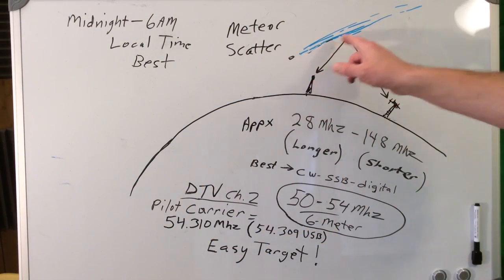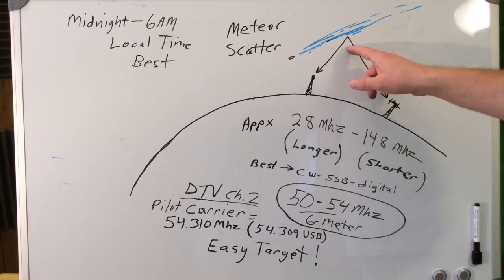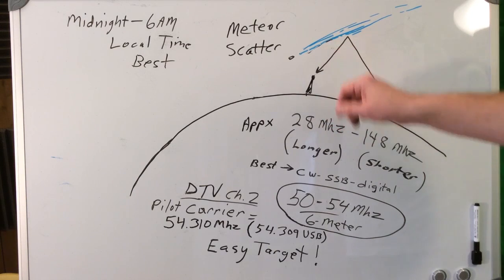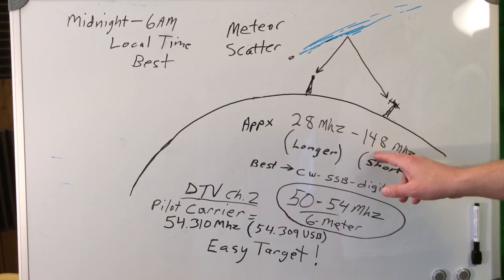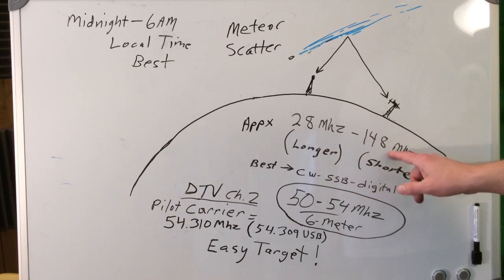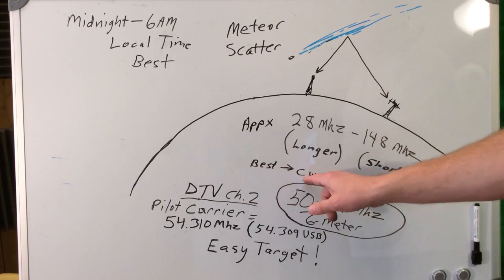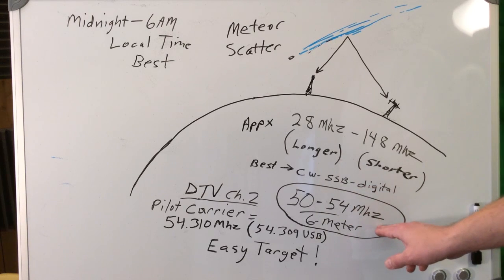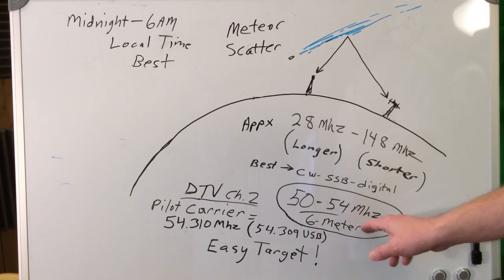When a meteor enters the Earth's atmosphere, it leaves behind an ionized trail that will reflect radio signals for up to hundreds of miles. The best frequency range is from about 28 MHz up to about 148 MHz. On the lower frequencies, the reflection will usually last a little bit longer. Some of the better modes are CW, sideband, and digital for hams, and one of the common bands for hams is 6 meters for meteor reflection.